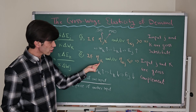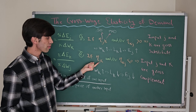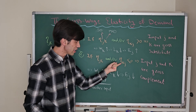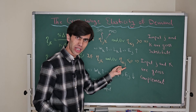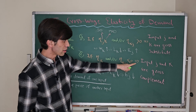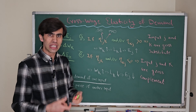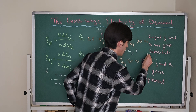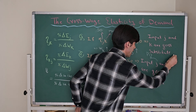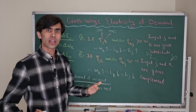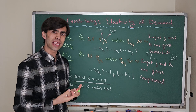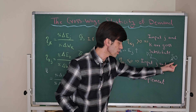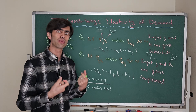In another case, when the elasticity of input J with respect to the wage level of input K — or the elasticity of input K with respect to the wage level of input J — is less than zero, it means input J and input K are gross complements. We need to use both of them together. For example, if J is a production officer and K is a sales officer, they are complements — we need both in the company to produce output and to sell it in the market. They cannot be substituted.